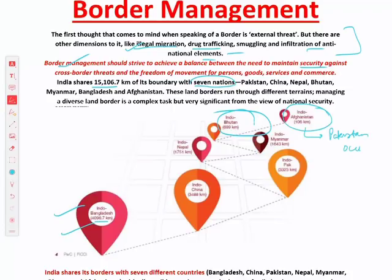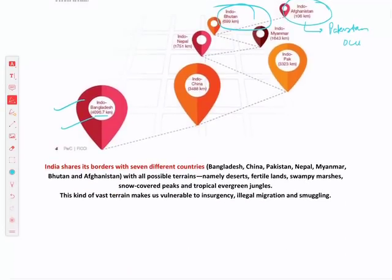When writing exams, note that India shares a border with seven countries, and Afghanistan's border is in Pakistan-occupied Kashmir. If we observe border areas closely, there are all kinds of terrain — mountainous terrain, riverine borders, deserts, fertile lands, and snow-covered peaks. Every kind of terrain exists along our borders.